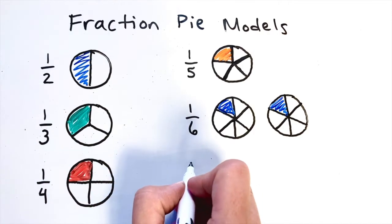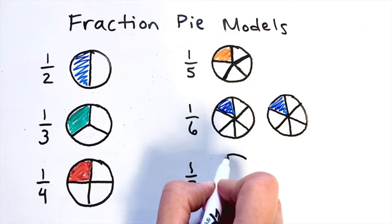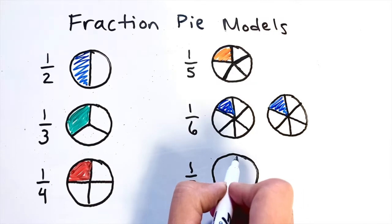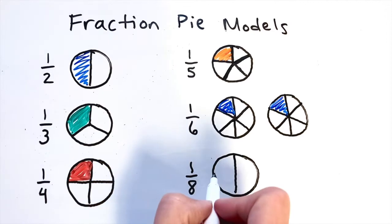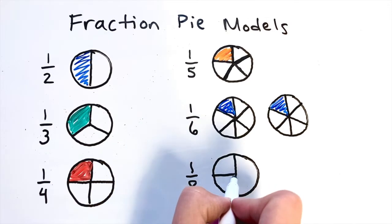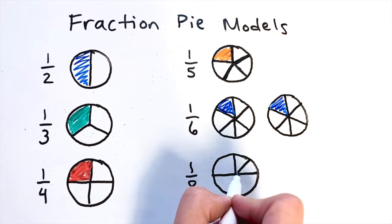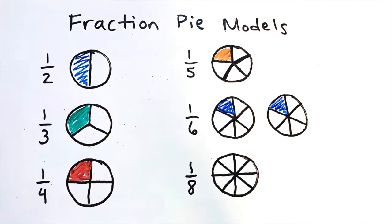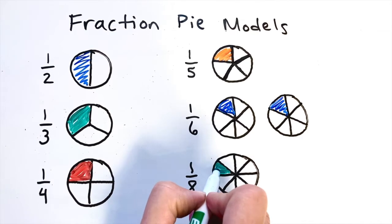Let's look at drawing one eighth. Start with a circle, draw a line down the middle, then a line across — and then cut each of those in half by drawing an X shape on top of that plus sign. So eighths are basically a plus sign with an X on top.